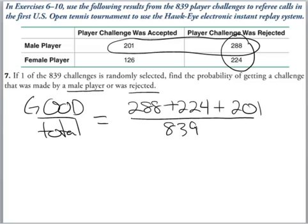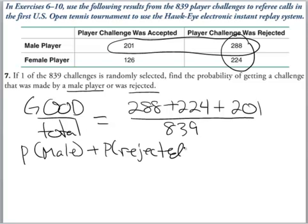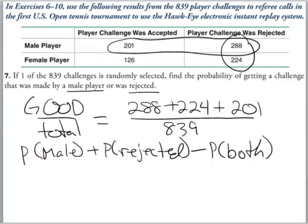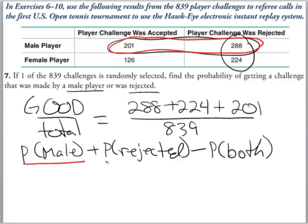So again our good over total is 288 plus 224, those are the rejected ones, plus the 201 all over 839. Now in the book and in a real probability class they talk about conditional probability and they get into the whole thing of we could just do the probability that they're male plus the probability that they were rejected, but because there's an overlap we have to subtract the probability of both. And visually you can see that with red probability of male, and with green there's probability of rejected. And you can see that the 288 was counted twice.